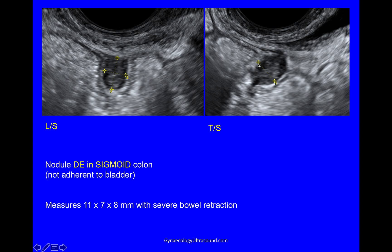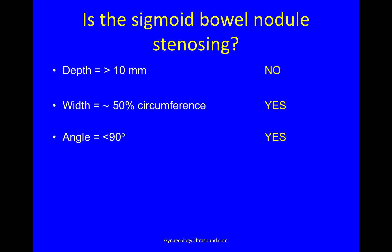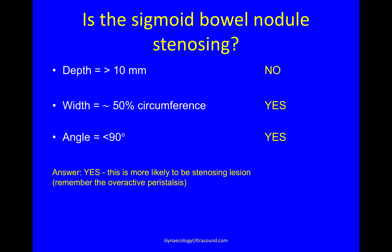If you look at the angle that the bowel makes, it is very retracted. So is it also stenosing? It's not more than 10 millimetres in depth, it does cover half the circumference, and it made a very acute angle. So I think this is quite likely to be a stenosing lesion — and especially bearing in mind we saw this very overactive peristalsis.